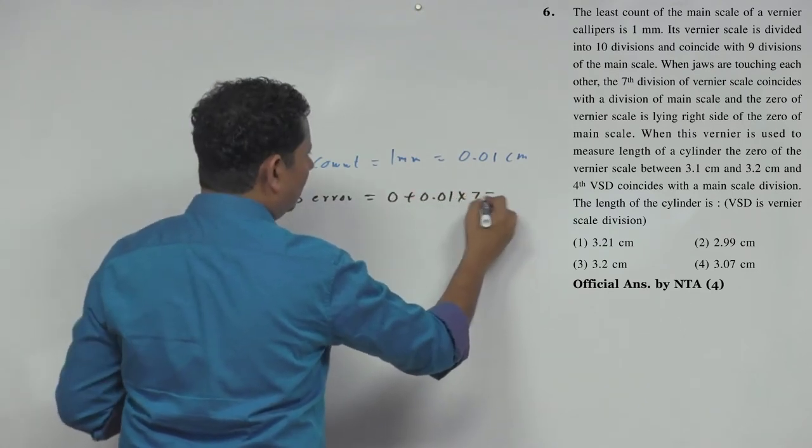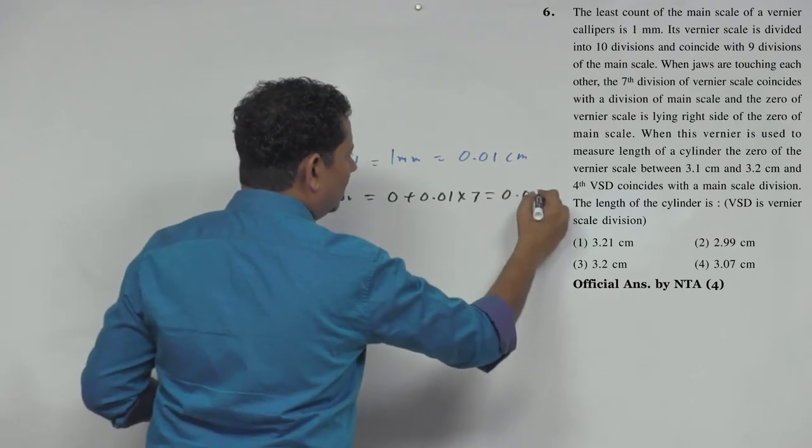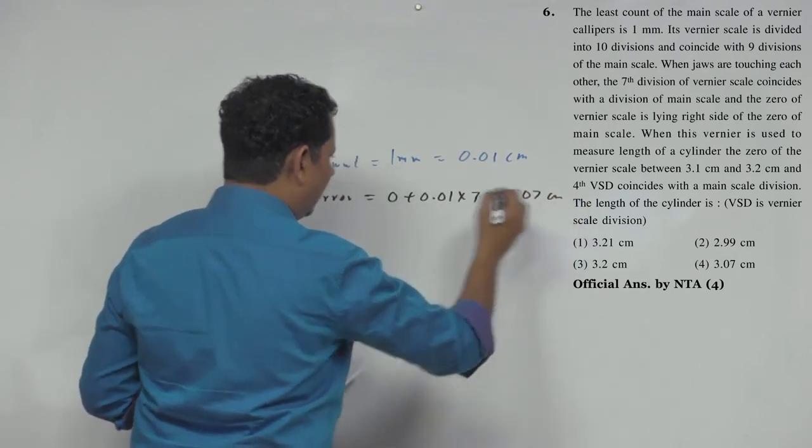This is 0.01 multiplied by 7, because it is zero error. This would be 0.07 cm. This is your error.